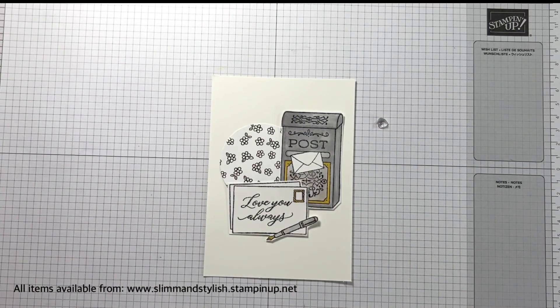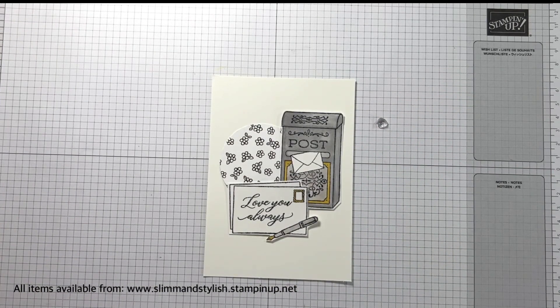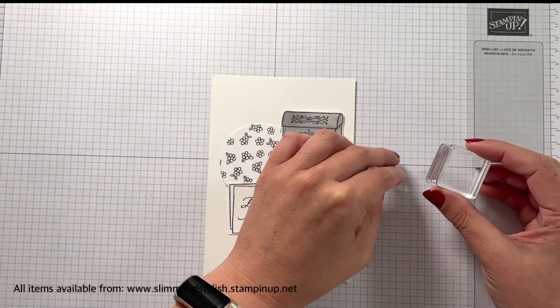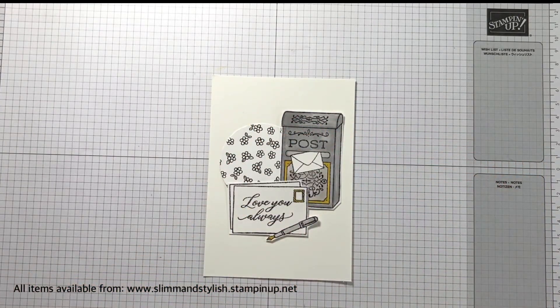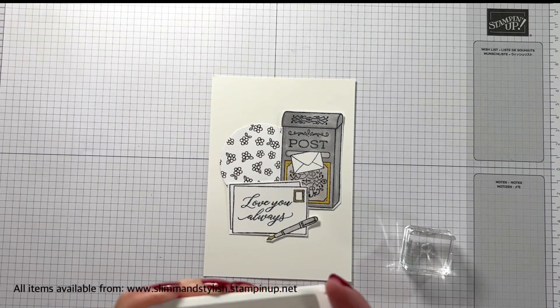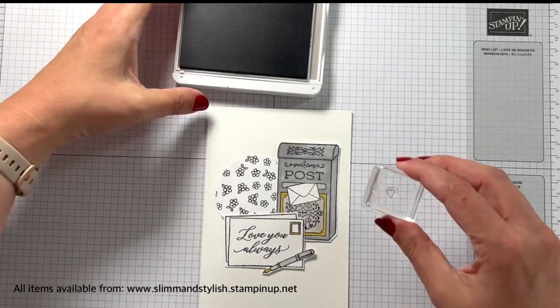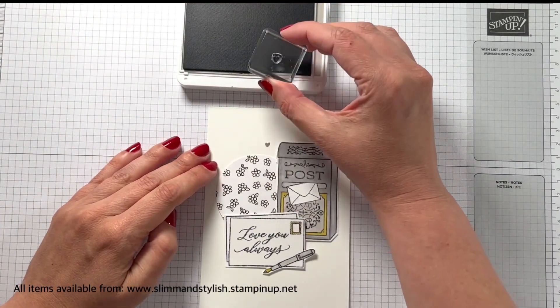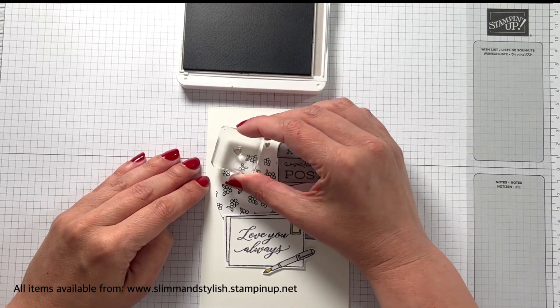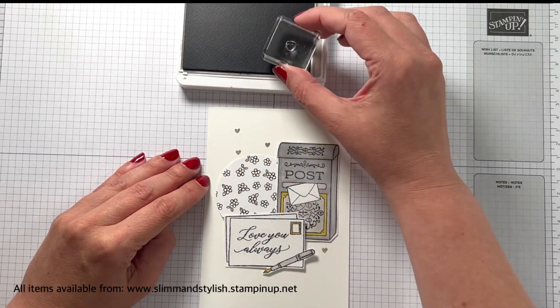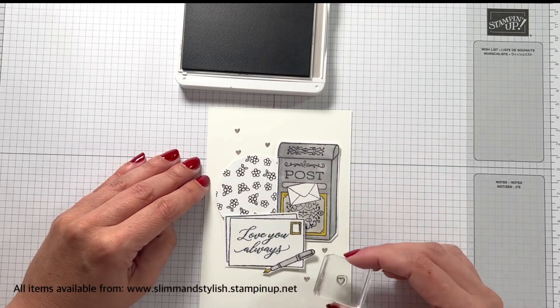There's this tiny, tiny little heart stamp in this set. Now I must admit when I first saw it I did panic because I can guarantee this is going to be the stamp that I lose. It is teensy but it's really cute and it's great for just adding some background detail onto your card. So I just stamped that around where I'm going to be popping the images to finish it off.